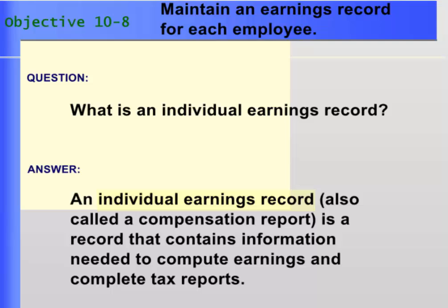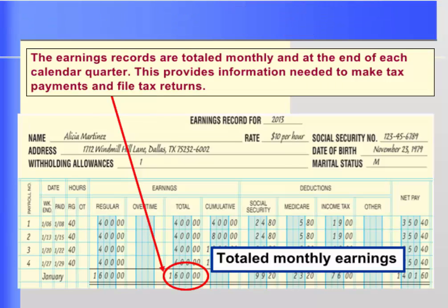Employers must maintain individual earnings information in an individual earnings record, which contains information needed to compute earnings and complete tax reports. This includes the employee's name, address, social security number, date of birth, number of withholding allowances claimed, rate of pay, and any other information necessary for required tax reports. By the end of the month, Alicia Martinez had earned gross wages of $1,600. Earnings records are totaled monthly and at the end of each calendar quarter to provide information needed to make tax payments and file tax returns.